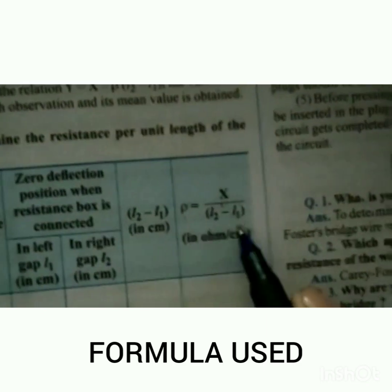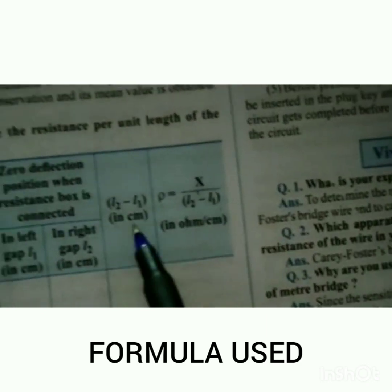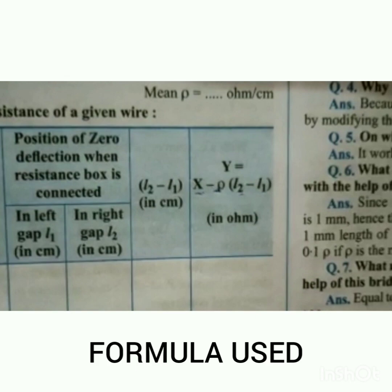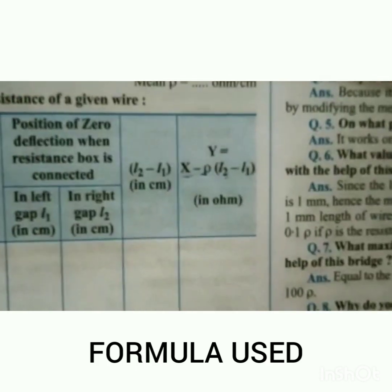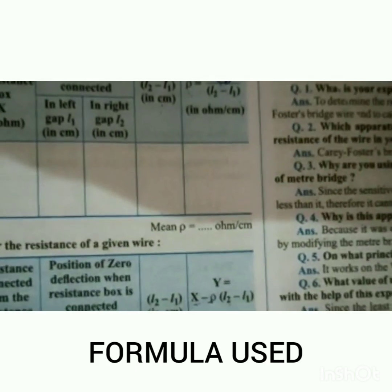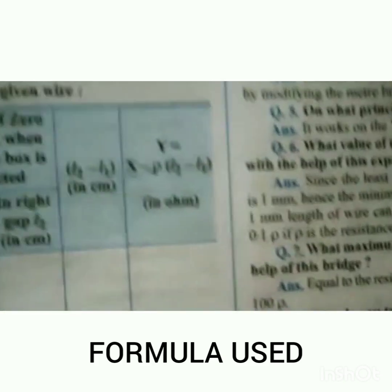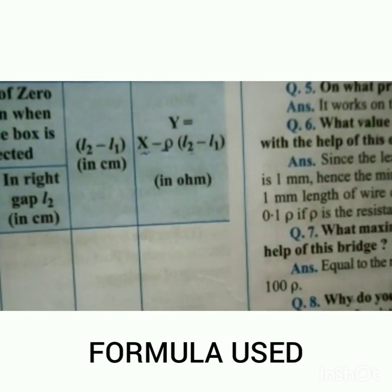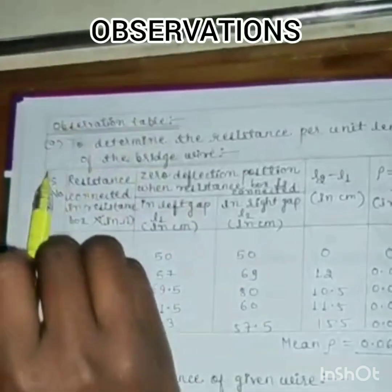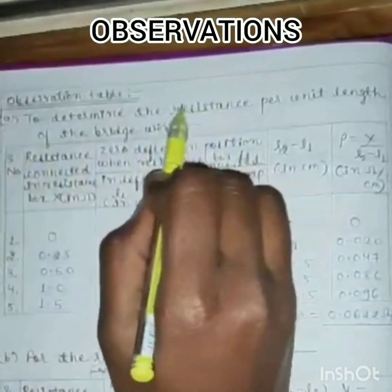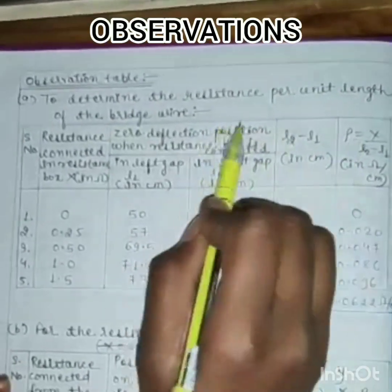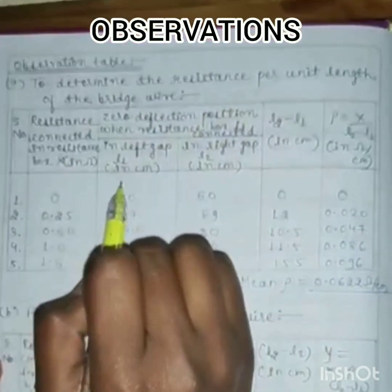L2 minus L1 is the difference between L2 and L1. We will also determine the resistance of the left-side gap using the formula: y equals x minus rho times (L2 minus L1), with unit ohm. This is our observation table. The resistance per unit length, rho, is the value to find.